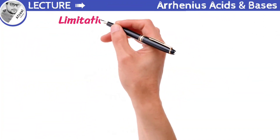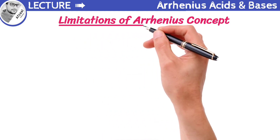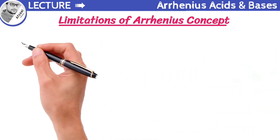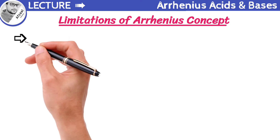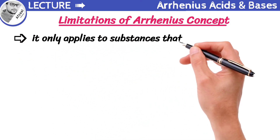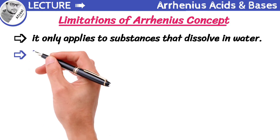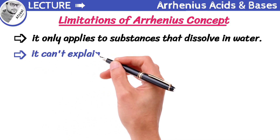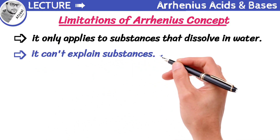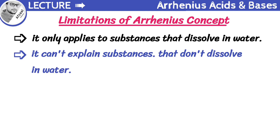The Arrhenius concept is a fundamental concept in chemistry that explains acids and bases. But it has some limitations. One major limitation is that it only applies to substances that dissolve in water. This means that it can't explain substances that don't dissolve in water, like certain organic compounds.